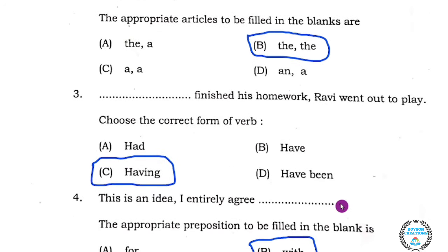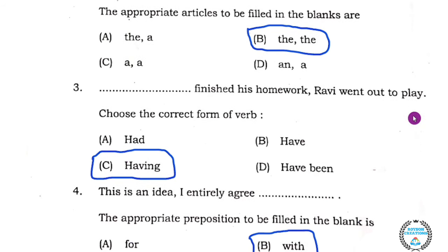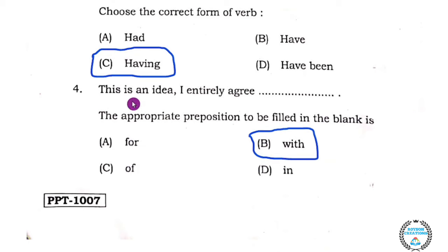Question number three: 'Dash finished his homework, Ravi went out to play.' Choose the correct form of verb. The answer is 'Having' — 'Having finished his homework, Ravi went out to play.' Question number four: 'This is an idea I entirely agree dash.' The appropriate preposition to be filled in the blank is —